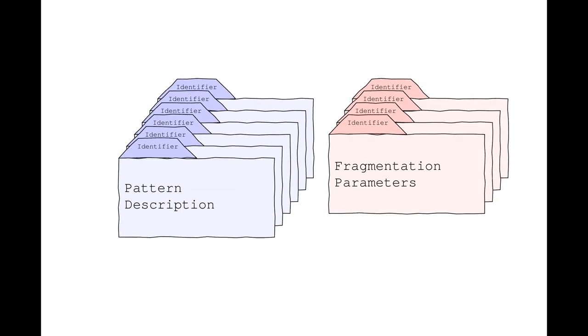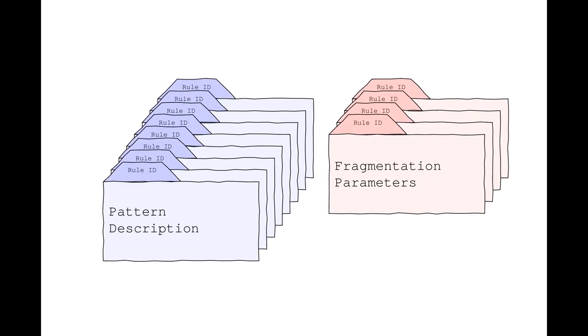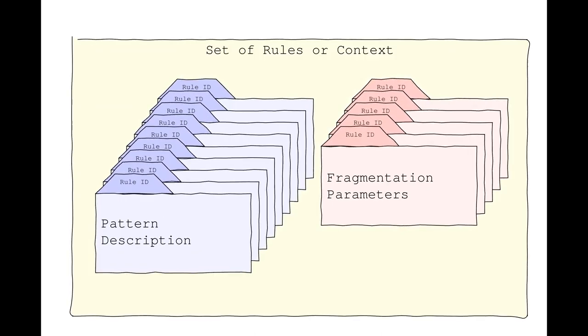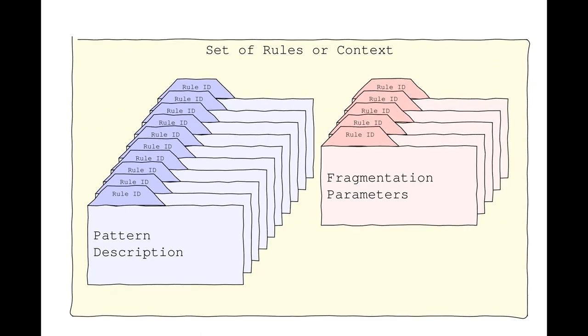As we discussed previously, both ends of a SCHC communication share a common set of rules, and these rules are identified by rule IDs.